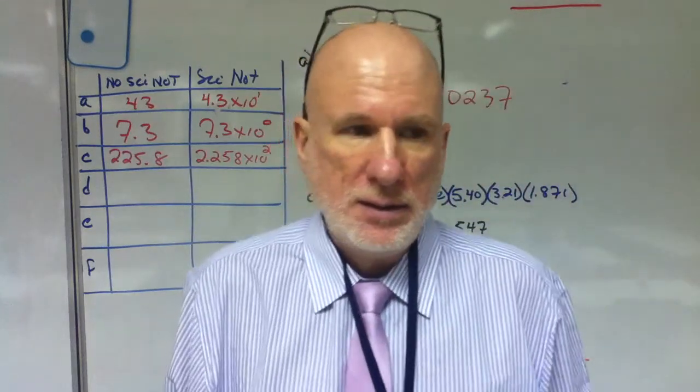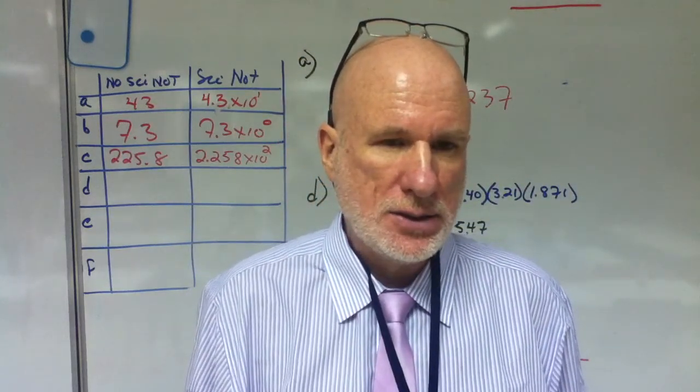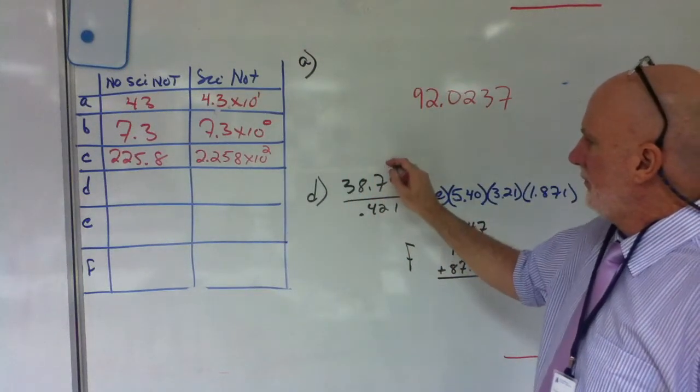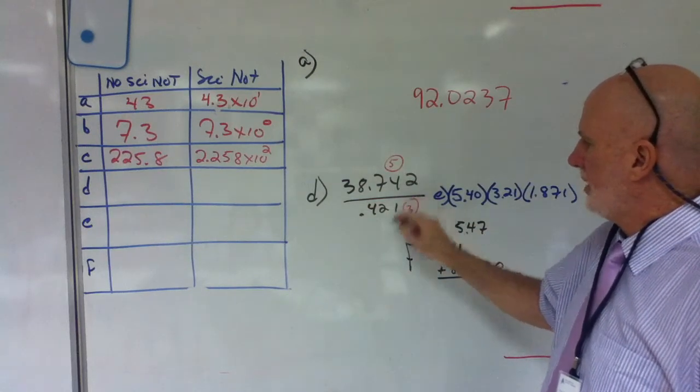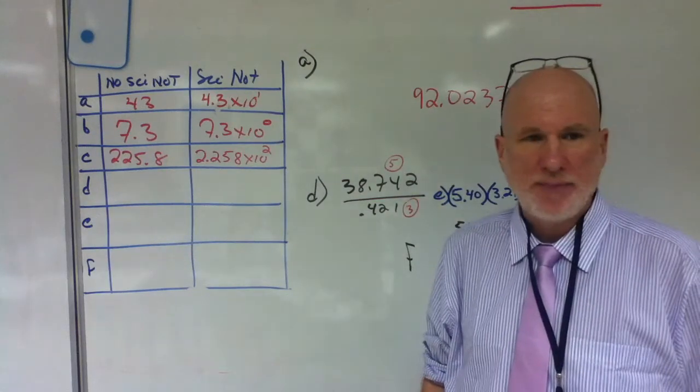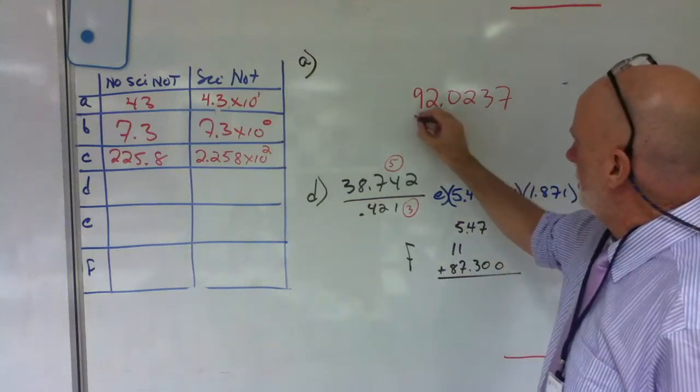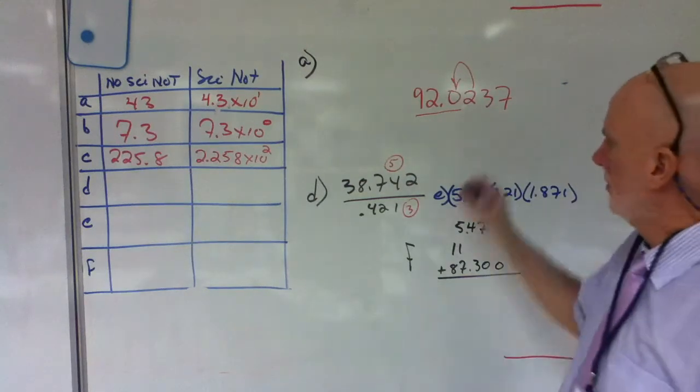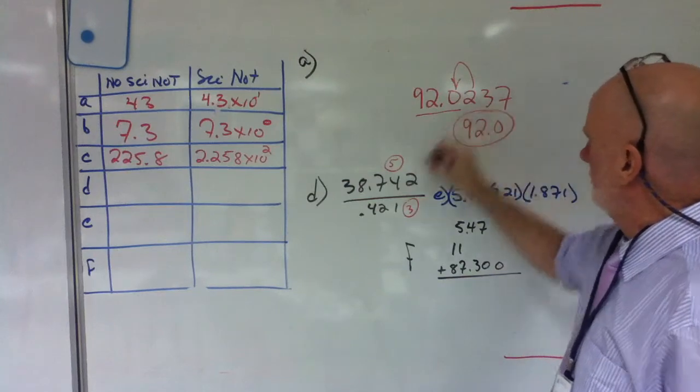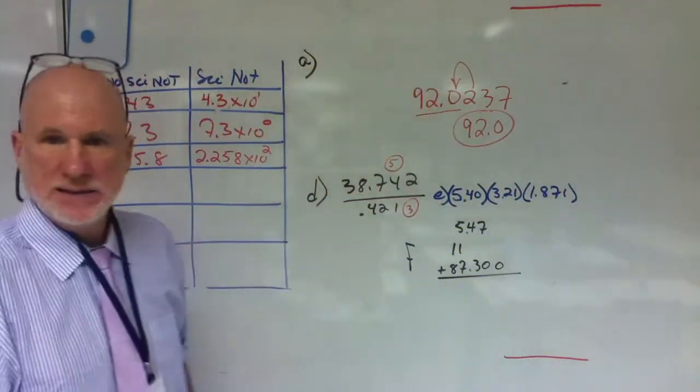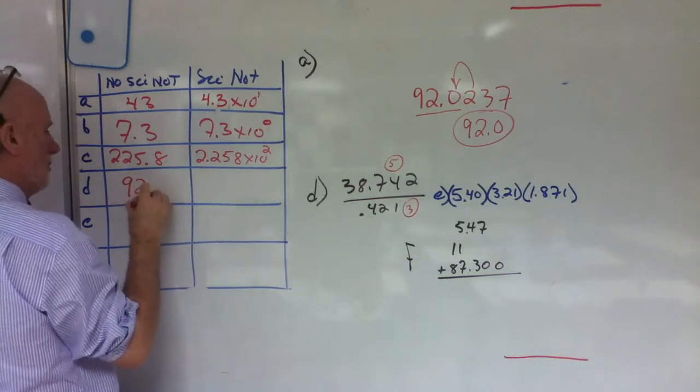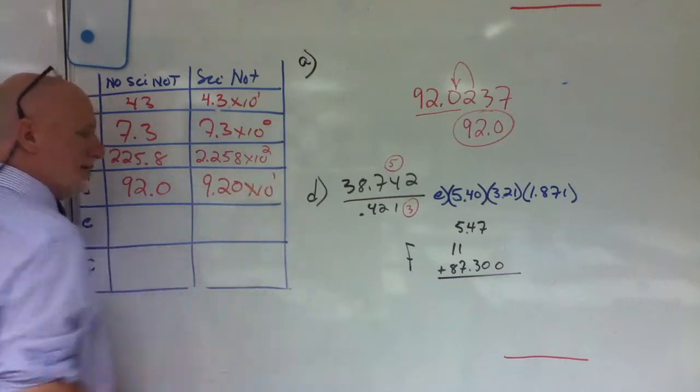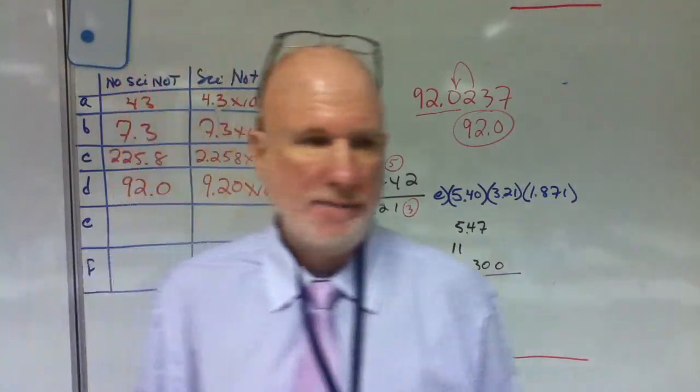All right. So obviously that's not going to be correct. So what do I put? There's five significant answers there. There's three there. So how many do I put in my answer? Three. So what am I left with? 92.0. Are you all right with that? 92.0, 9.20 times 10 to the 1. You with me?